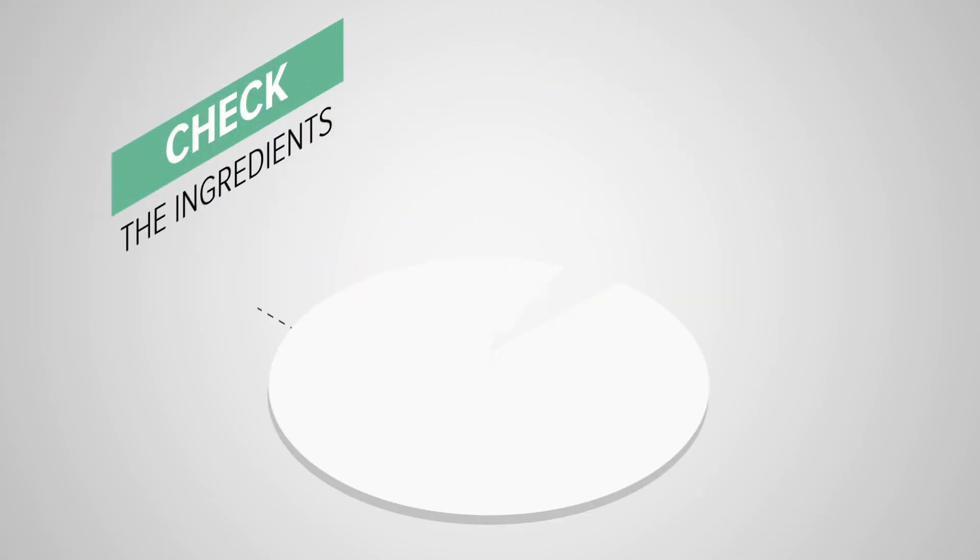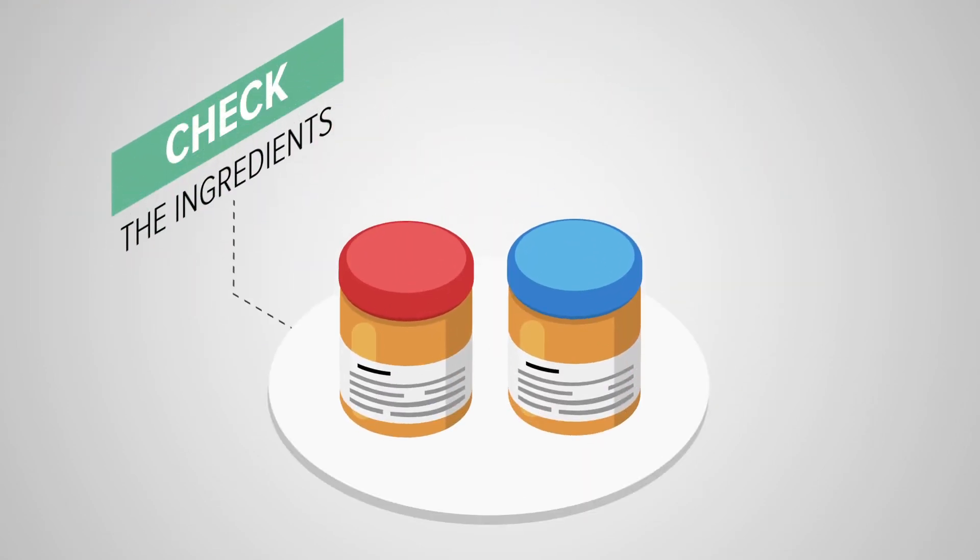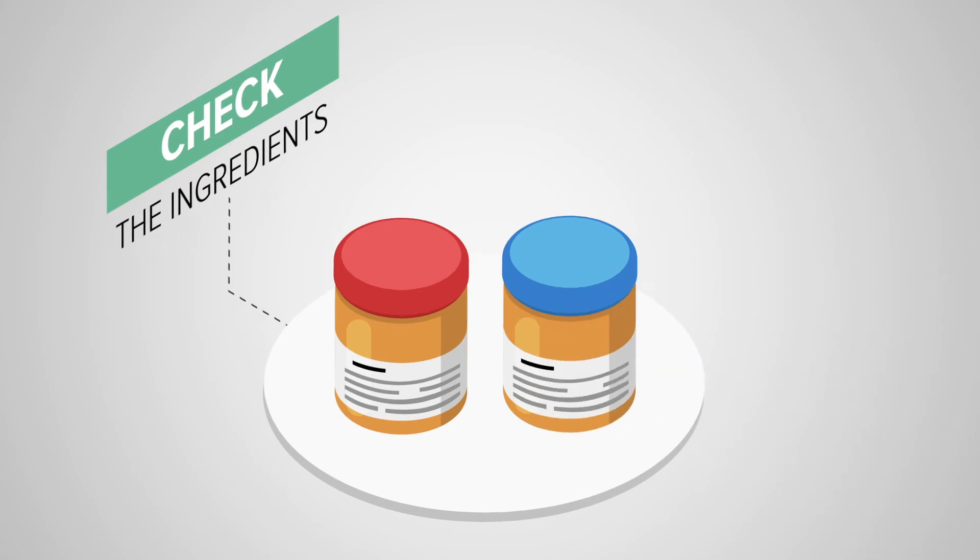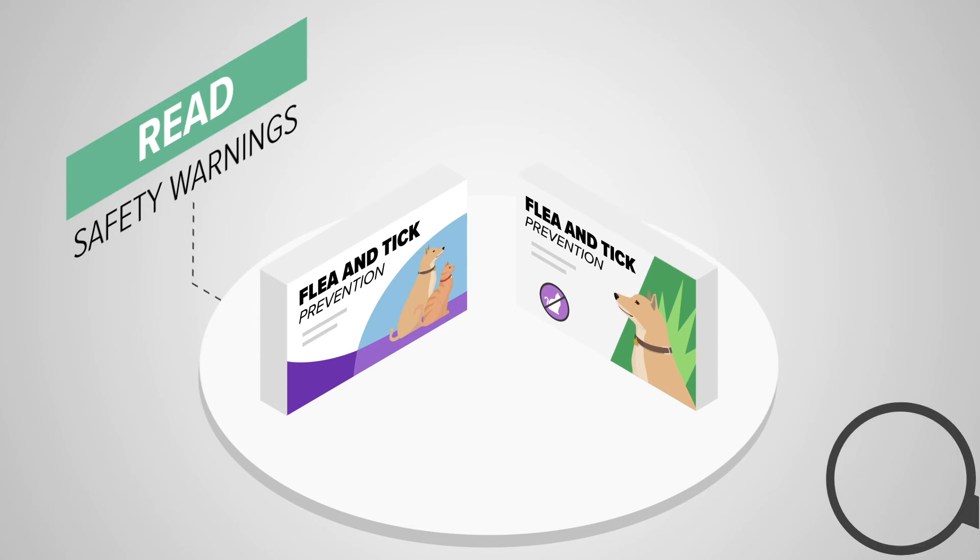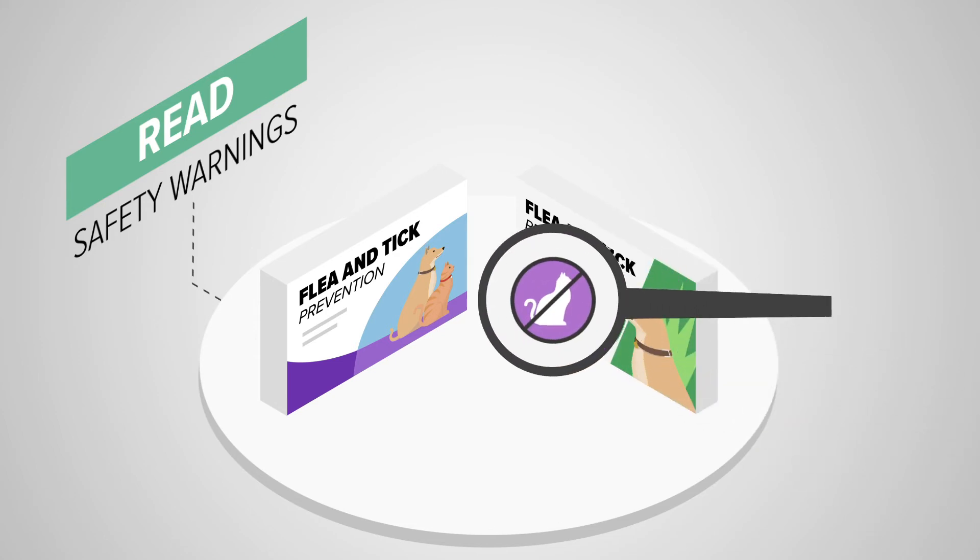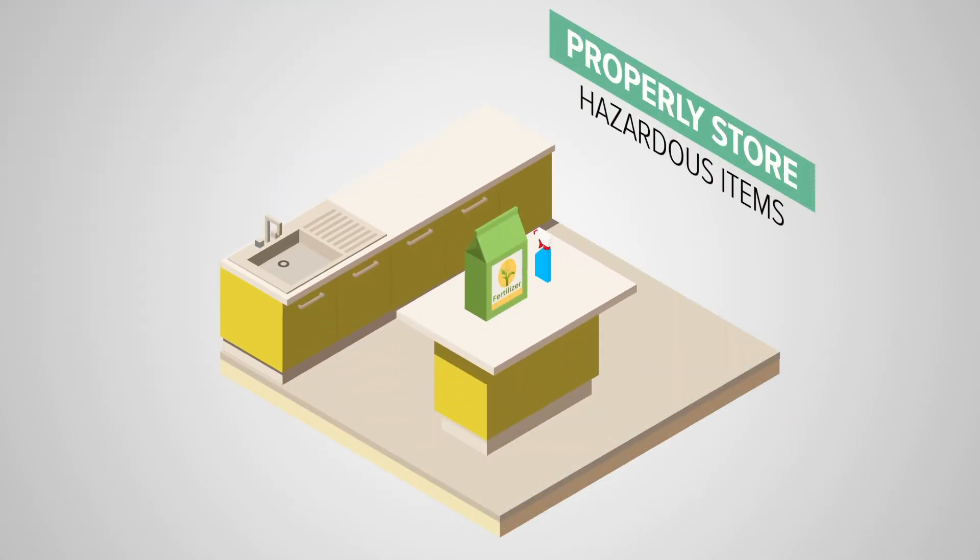Danger can even vary from brand to brand. Peanut butter is a great example, since some brands contain xylitol, an artificial sweetener that can be deadly to dogs. Reactions to products can also vary greatly between cats and dogs. For instance, some flea and tick products for dogs are dangerous for cats.